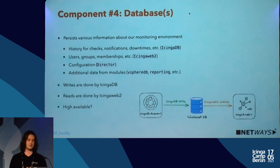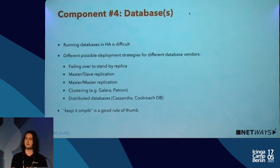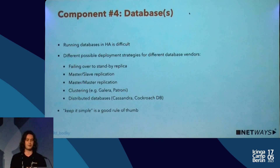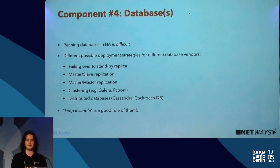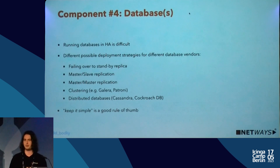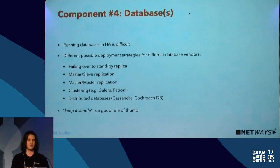The database is right at the heart of the whole Icinga ecosystem, but making it highly available is a rocky road. Technologies vary depending on the database vendor, and there are many different ways to run an HA database setup: failover to standby replica, master-slave, master-master, clustering solutions like Galera for MariaDB or Patroni for PostgreSQL, or newer distributed databases like Cassandra or CockroachDB.